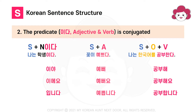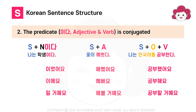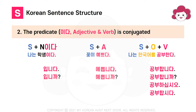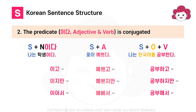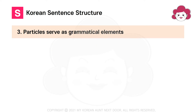These endings show grammatical information and roles such as speech politeness, tense, sentence types, conjunctive ending types, and so on. Number 3.